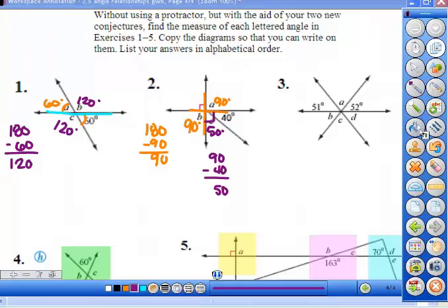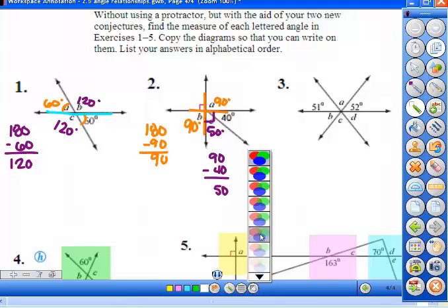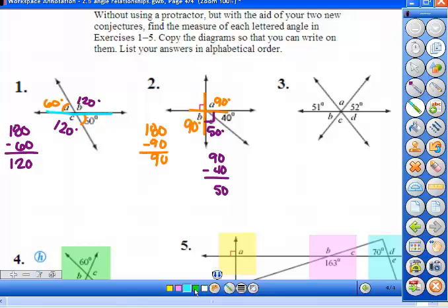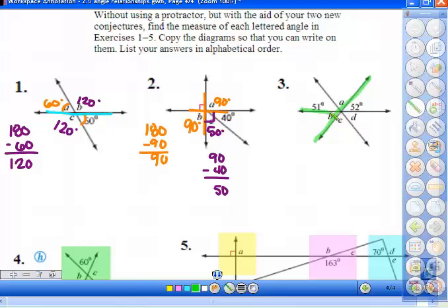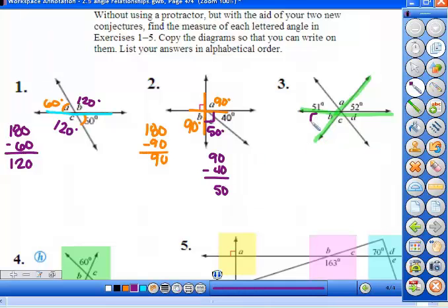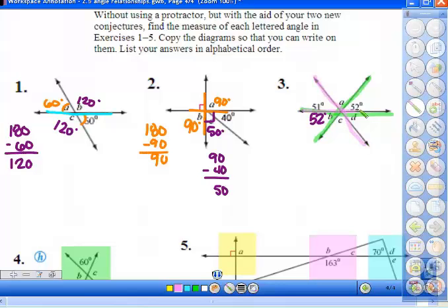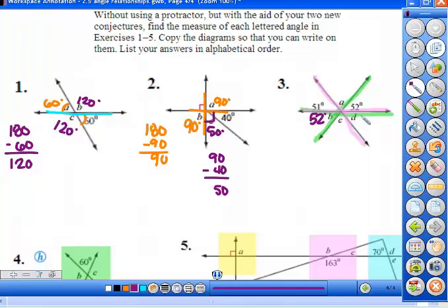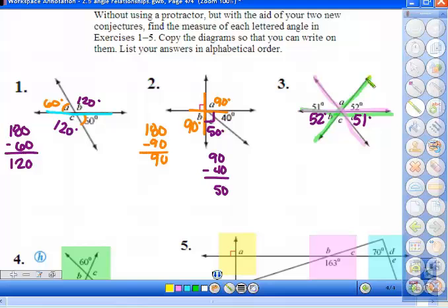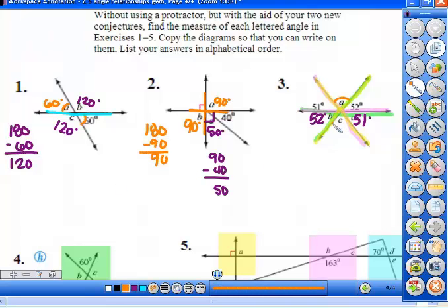In picture three, there's a few different intersections, so you have to be careful when you're looking at these. I will highlight so you can see what picture I want you looking at. First, let's look at this line and this line intersecting. The vertical angles would be B and 52, so this angle B is 52 degrees. And then let's look at these lines intersecting. 51 is across from D, so D is 51.